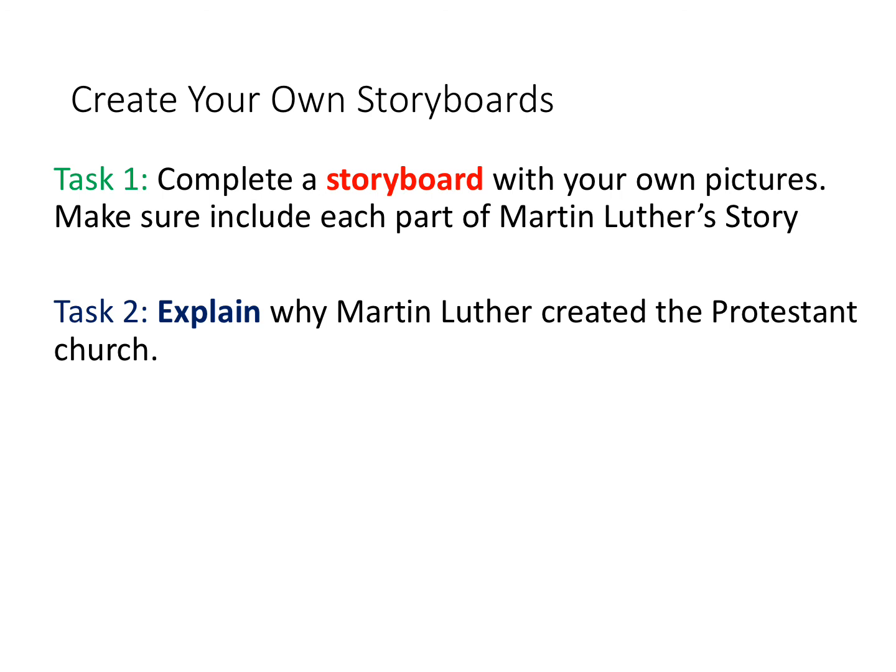Now that you've seen my version of the storyboard, it's time to create your own. Use words and pictures to demonstrate the story of Martin Luther and show how the story of a German monk led eventually to the death of Richard Whiting at Glastonbury in 1539. Once you've done that, I'd also like you to explain in as few words as possible why Martin Luther created the Protestant Church — why did he think it was necessary to challenge things like the Pope being in charge of the church?